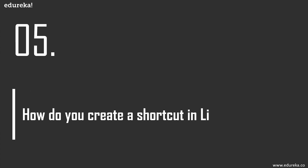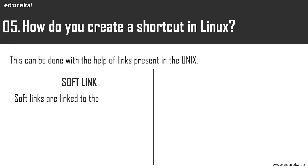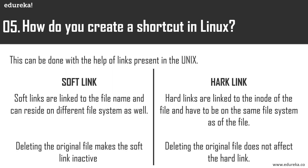How do you create a shortcut in Linux? You can create a shortcut using links — there are two kinds: soft links and hard links. Every file in the file system has an inode containing all file attributes except its name. A soft link points to the original file and has a different inode value. If the original file is deleted, the soft link fails, but deleting the soft link doesn't affect the original file.